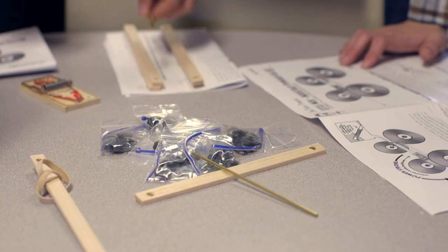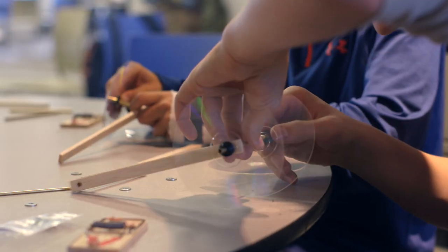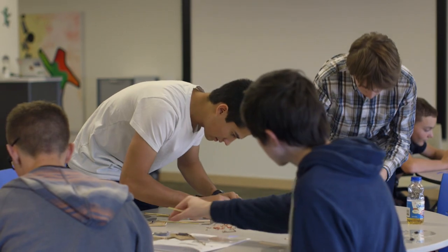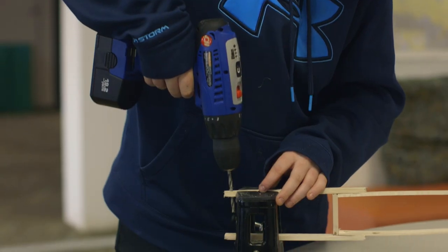At that point we were able to build our mouse trap buses, put them together, tweak them a little bit. Some students use big records for wheels and others use Lego wheels to see what kind of effects those would have on the efficiency of the bus.